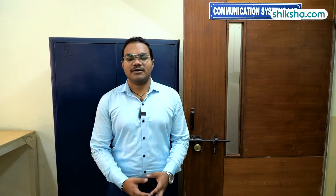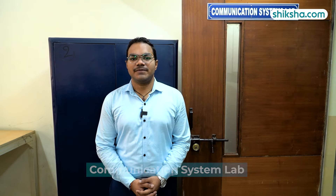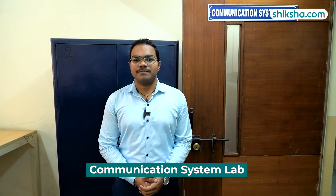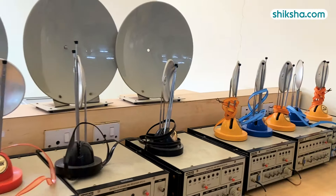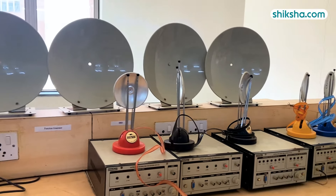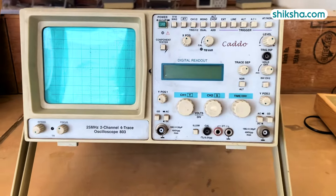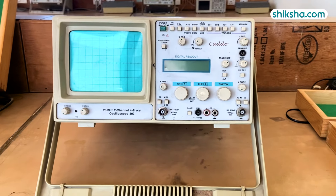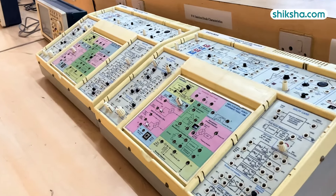Now we have come to the first floor of the B-Block building. The first lab here is the communication system lab. In this lab we have satellite receiver and transmitter systems, and radar systems for receiving and transmitting analog signals.